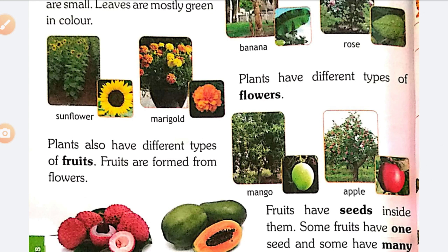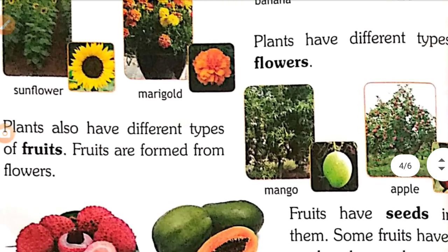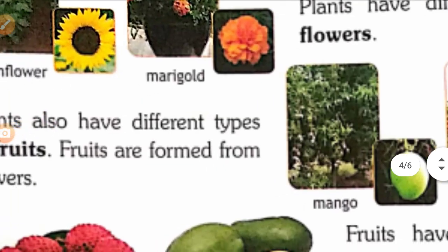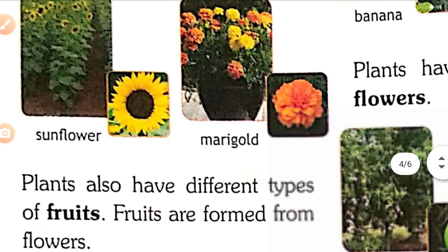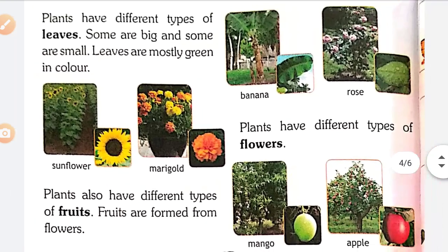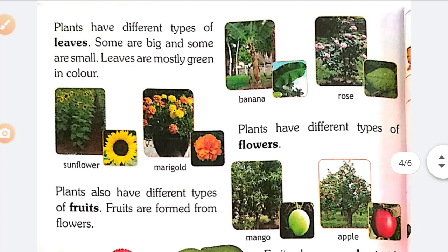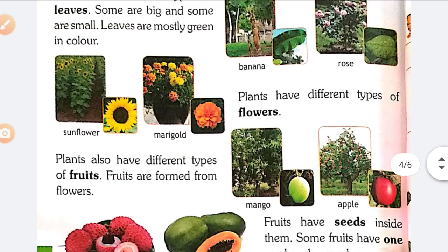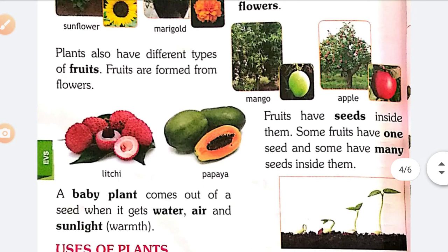Plants have different types of flowers. You can see the sunflower, marigold, rose, and jasmine shown here. They have different petals, different structure, different color, and different smell also.